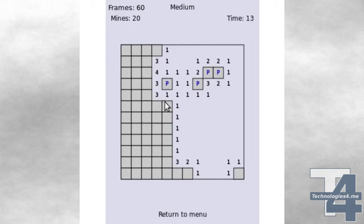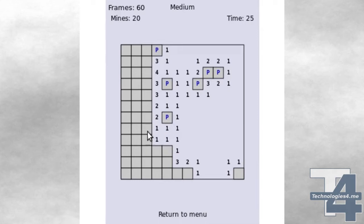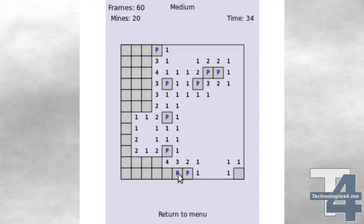Clicking on a randomly placed mine results in a game over situation — the player has lost. Otherwise, the player gets hints as to where the mines are placed by numbers on grid squares that have been uncovered, showing the number of adjacent mines. This information can be used to calculate which tiles contain mines and which tiles are clear to click on.